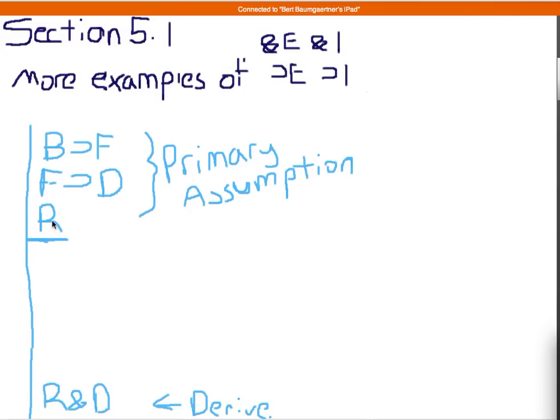So I know already I have R, but in order to get D, I want to use conjunction introduction, but I first need to get D somewhere here. And I notice, we're going to think backwards a little bit, that D is found here in the material conditional, this consequent of the material conditional. And here, F is the consequent of this other material conditional, B.